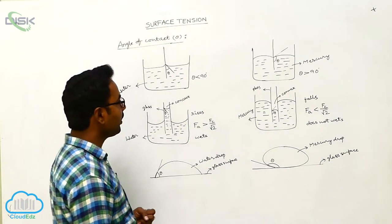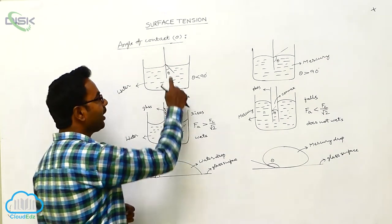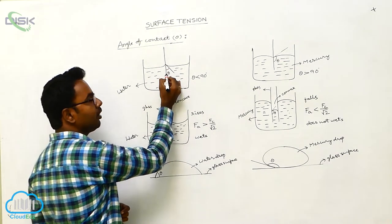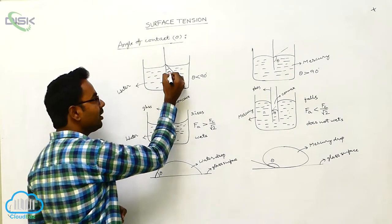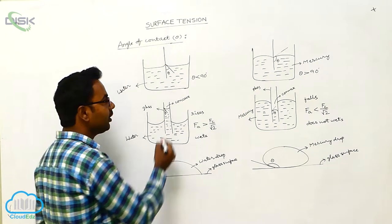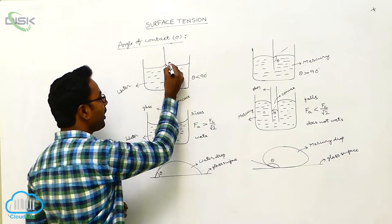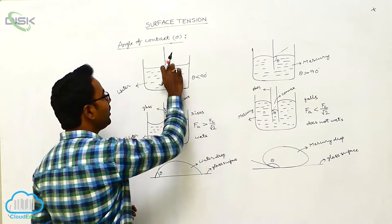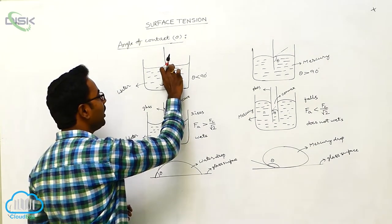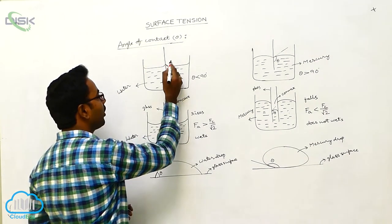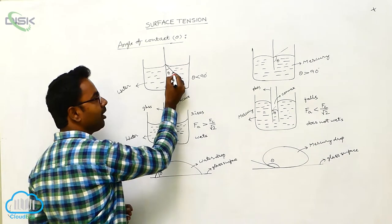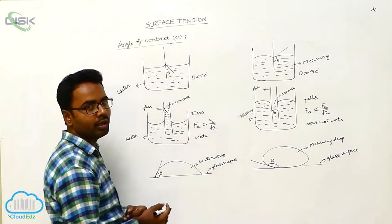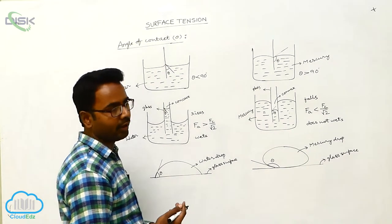Angle of contact is defined as the angle made by the tangent drawn at the point of contact with the solid surface, measured inside the liquid. This tangent is also making some angle with the solid surface outside the liquid, but that angle is not called the angle of contact. Only the angle inside the liquid is called the angle of contact.